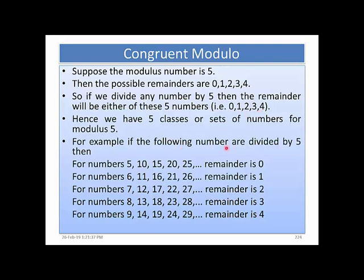For example, dividing by 5: the numbers 5, 10, 15, 20, 25 always give remainder 0; the numbers 6, 11, 16, 21, 26 give remainder 1; the numbers 7, 12, 17, 22, 27 give remainder 2; and 8, 13, 18, 23, 28, 3 give remainder 3, and so on. All numbers giving the same remainder fall in the same class: {5, 10, 15, 20, 25} belong to class 0; {6, 11, 16, 21, 26} belong to class 1; {7, 12, 17, 22, 27} belong to class 2; and so on.